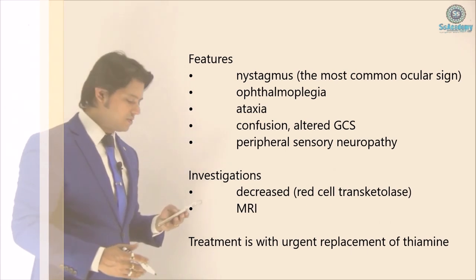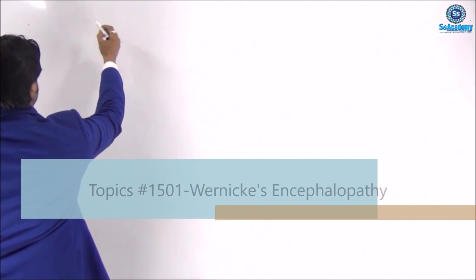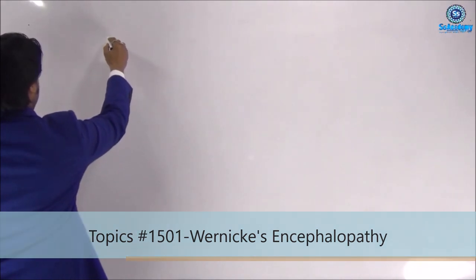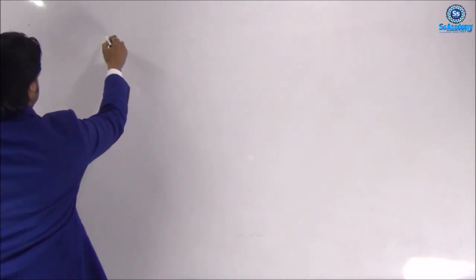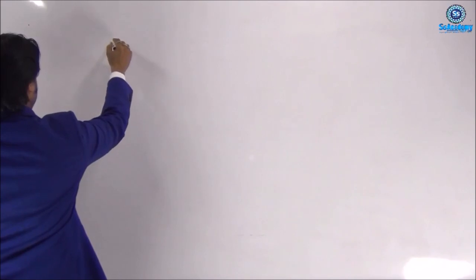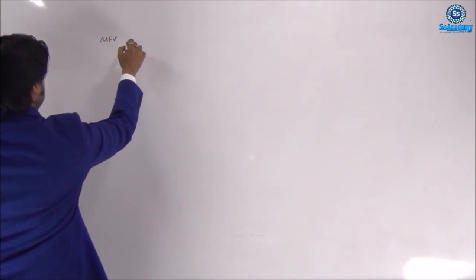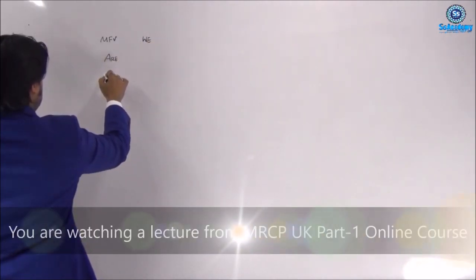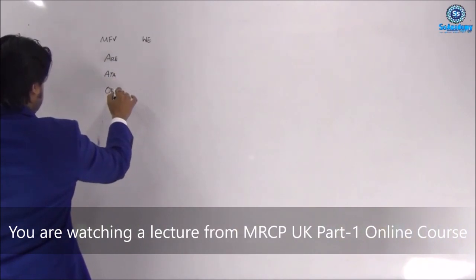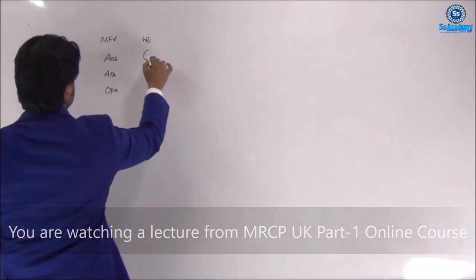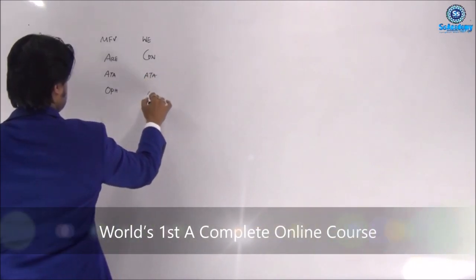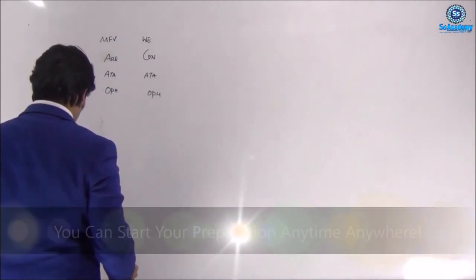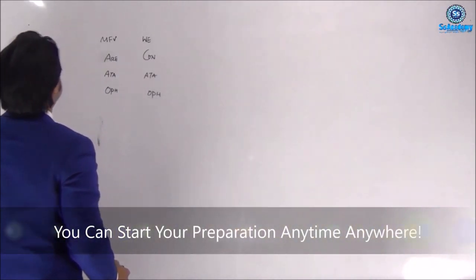Wernicke-Korsakoff is a three-star topic — very important. Let me now go through Wernicke's encephalopathy and compare it with the Miller-Fisher variant of GBS. Note the overlapping features and the differentiating points between Wernicke's encephalopathy and Miller-Fisher variant.